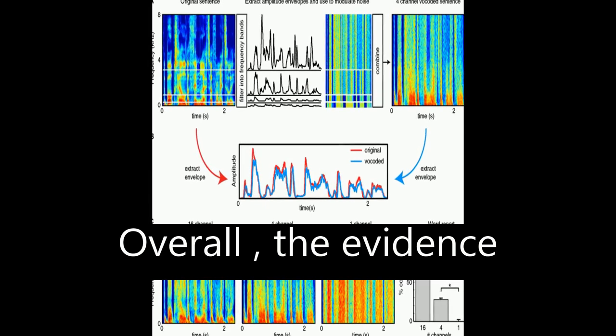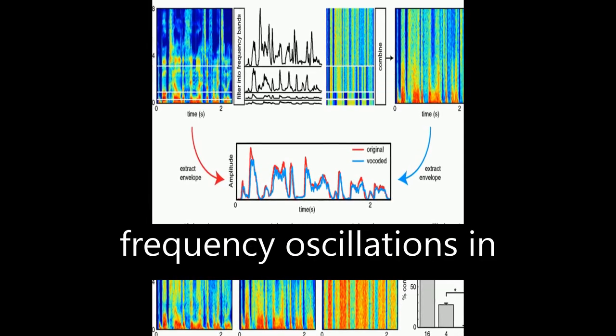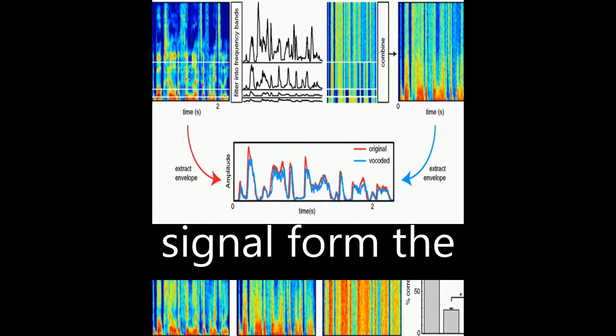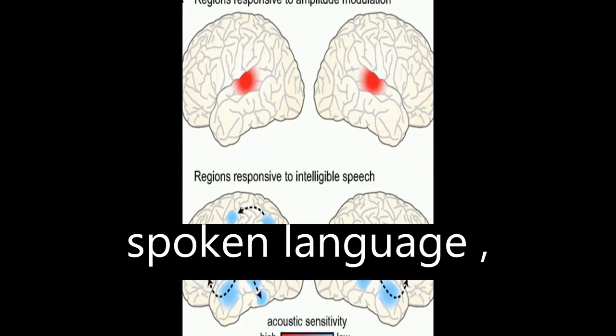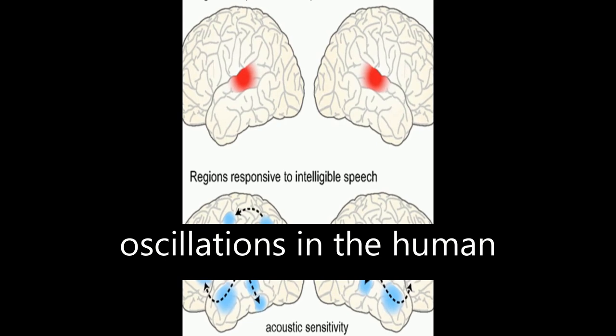Overall, the evidence suggests that low frequency oscillations in the acoustic speech signal form the foundation of a rhythmic hierarchy supporting spoken language, mirrored by phase-locked oscillations in the human brain.